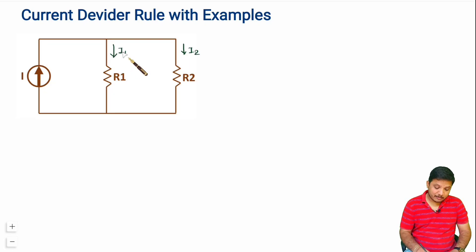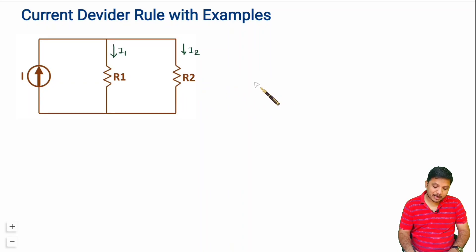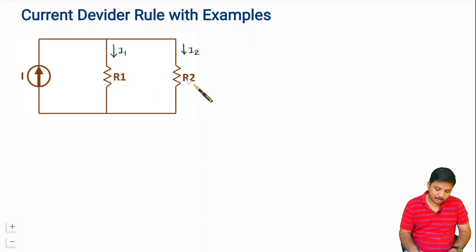As per the Current Divider Rule, we want to identify the values of I1 and I2. I will also explain the generalized formula for many resistors connected in parallel. Since these resistors are connected in parallel, the voltage across all resistors will be the same — voltage across R1 equals voltage across R2.